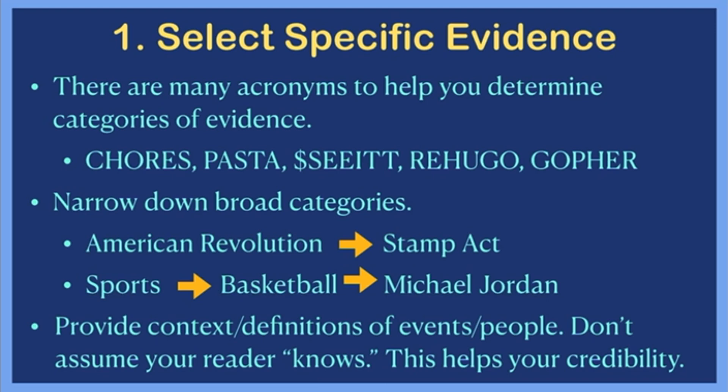As you are brainstorming your evidence, try to avoid broad categories and instead try to narrow them down. For instance, instead of saying the American Revolution, which is very broad, you could perhaps narrow it down to a specific part like the Stamp Act. You also don't want to assume that your reader knows about the people or events you're talking about, so you want to provide appropriate definitions or context. You could do this by using a non-restrictive clause or an appositive phrase — for example, the Stamp Act, comma, define it very briefly, comma, and then finish your sentence.